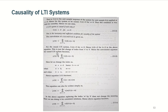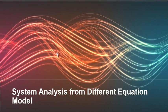This equation is obtained by putting the causality condition into the general convolution summation. Based on that, two types of systems are possible which we are going to discuss in this lecture. If you have not seen the previous lecture on causality and stability of CT-LTI and DT-LTI systems, the link will be on the top right-hand corner. Let's move further and see the system analysis from different equation models.